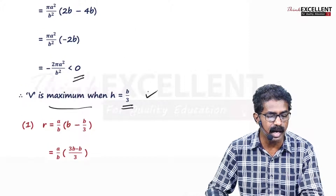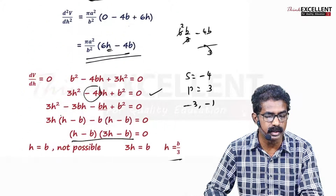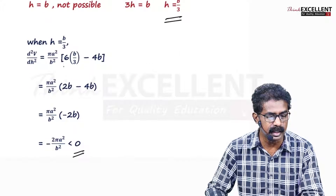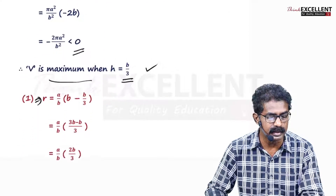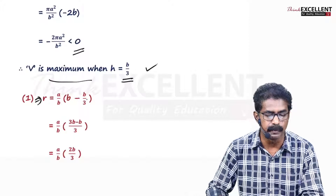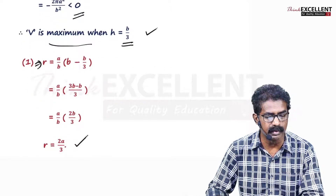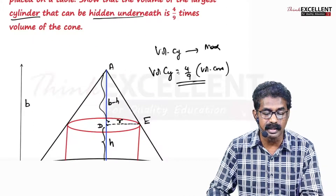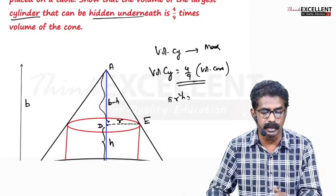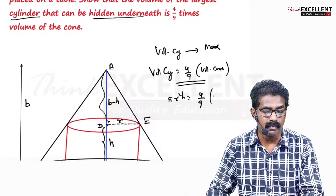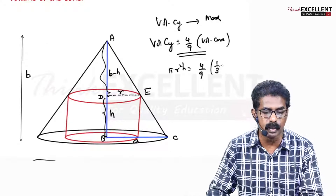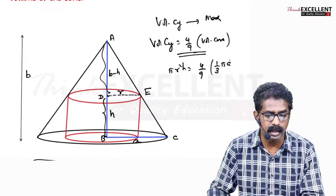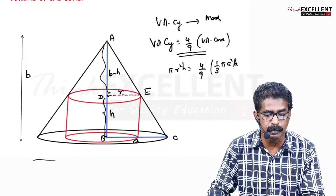Now we have H = B/3. To find R, substitute into R = (A/B)(B minus H) = (A/B)(B minus B/3). Simplifying, R = 2A/3. Now we know both R and H. We need to prove that the volume of the cylinder equals (4/9) times the volume of the cone, where the volume of the cone is (1/3)π A² B.